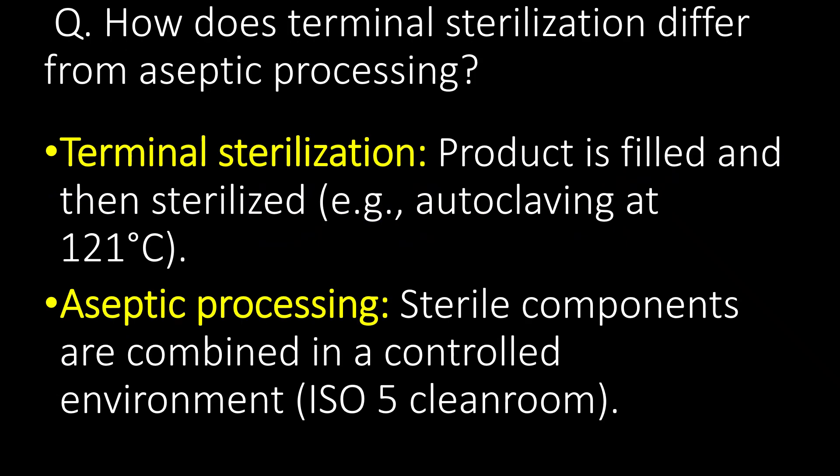How does terminal sterilization differ from aseptic processing? In terminal sterilization, the product is filled and then sterilized — for example, autoclaving at 121 degrees Celsius. In aseptic processing, sterile components are combined in a controlled environment such as ISO 5 clean rooms.